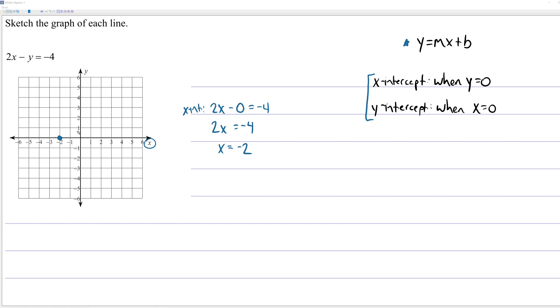And we can do something similar to find the y-intercept. Again, if you are on the y-axis, it means that your x-value is zero. You haven't gone left or right. So, to find the y-intercept of the line, you can replace the x-variable with zero.